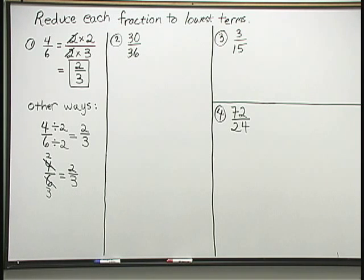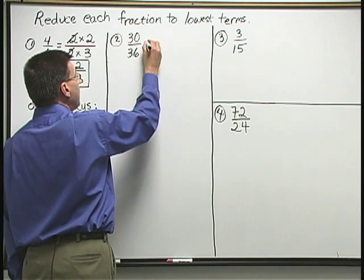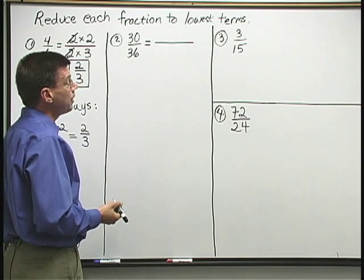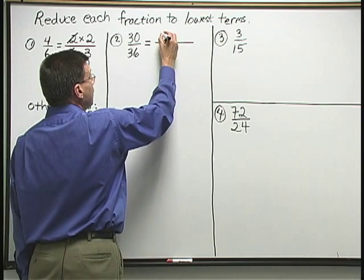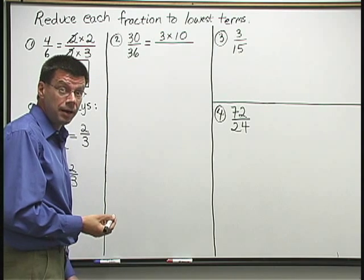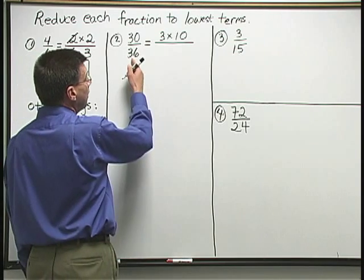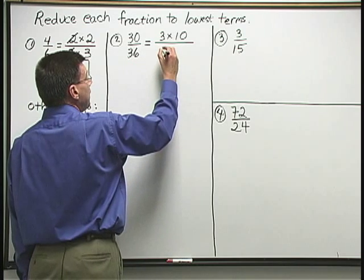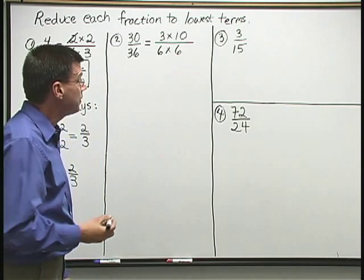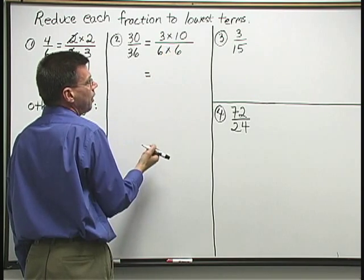Let's go ahead and do another problem now. Let's reduce 30/36. I start out by breaking down the numbers above and below using multiplication. 30 I can break down as 3 times 10. Now that's not the only way to break down 30, I just need to choose one of the ways. Down below 36, I could break down 36 as 6 times 6. Notice here I don't see the same number above and below.